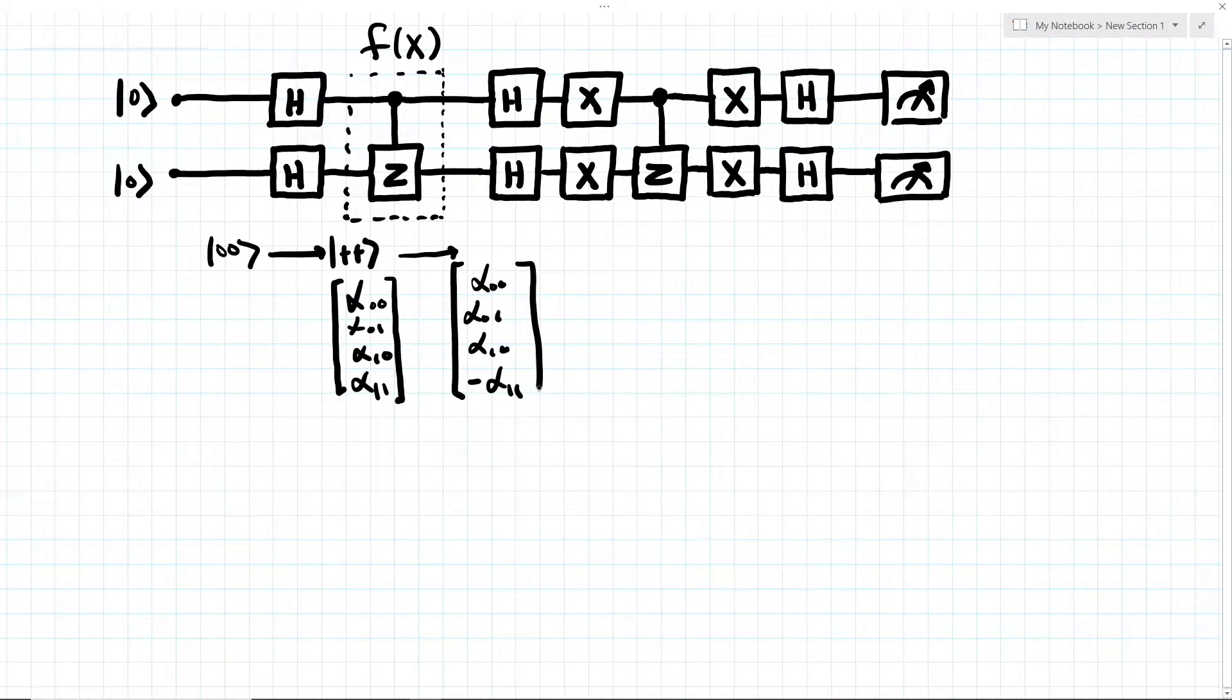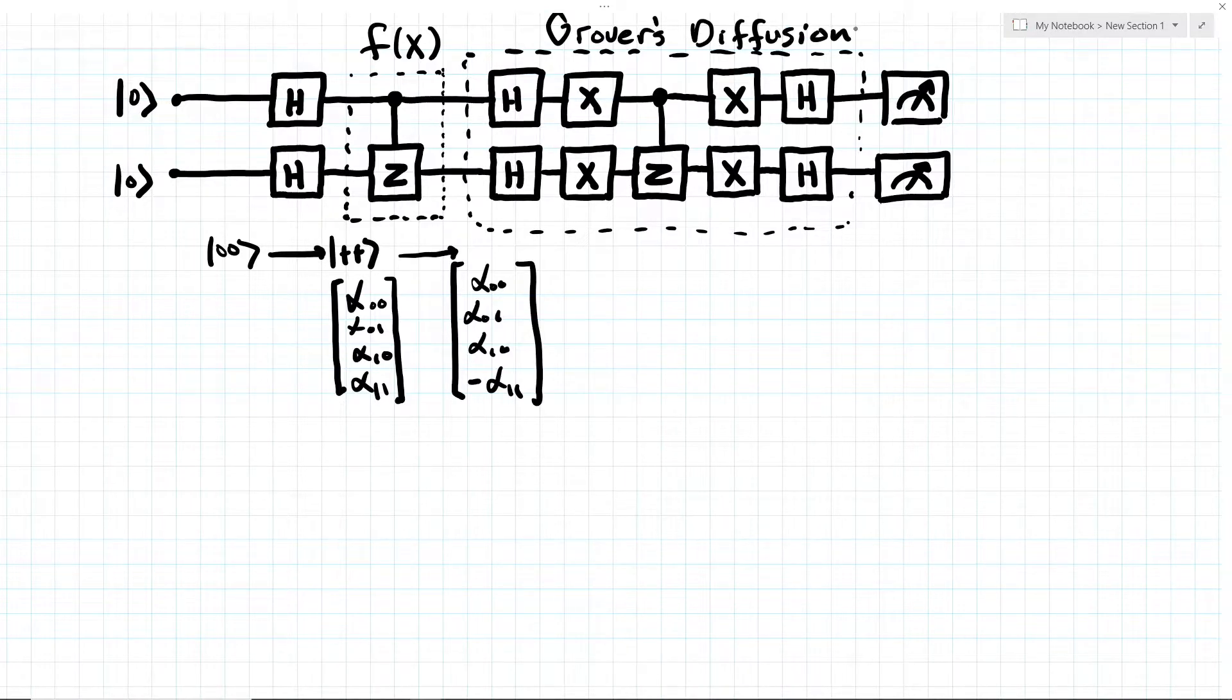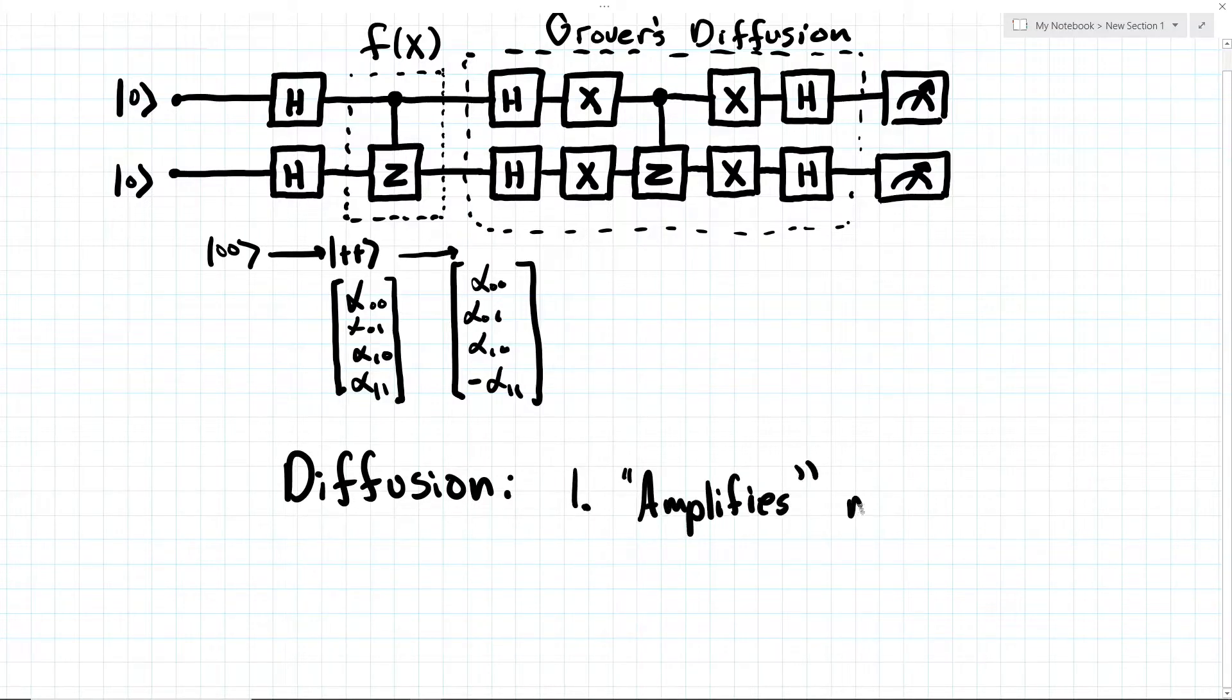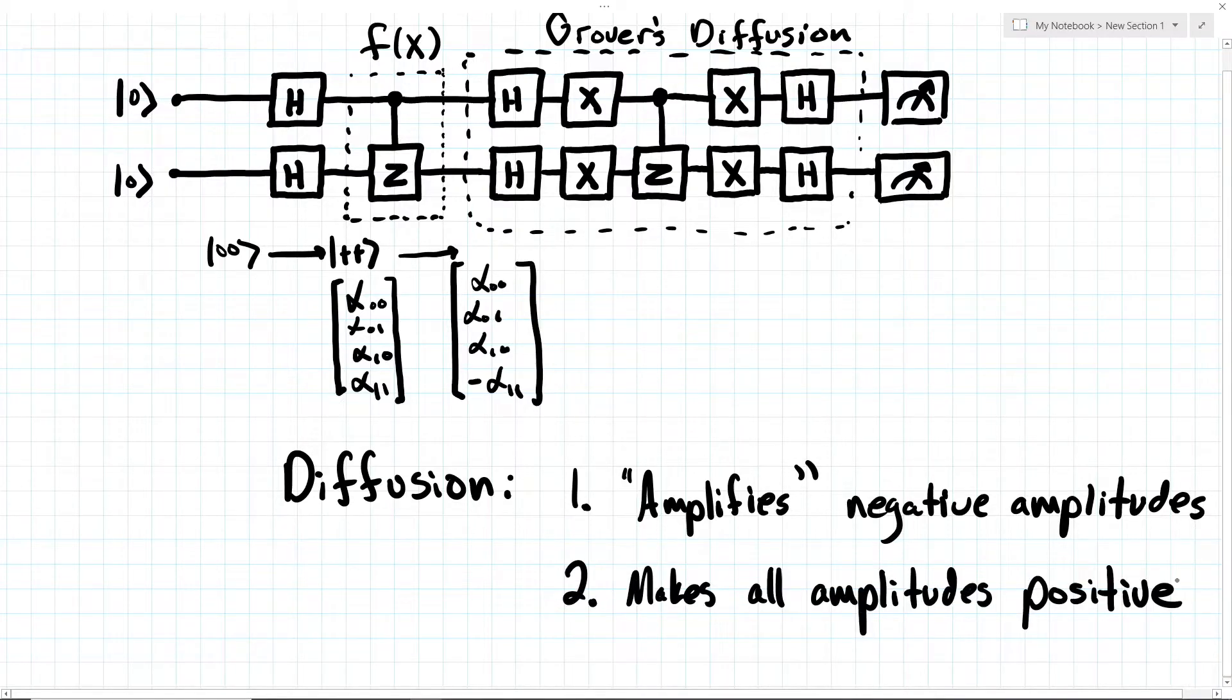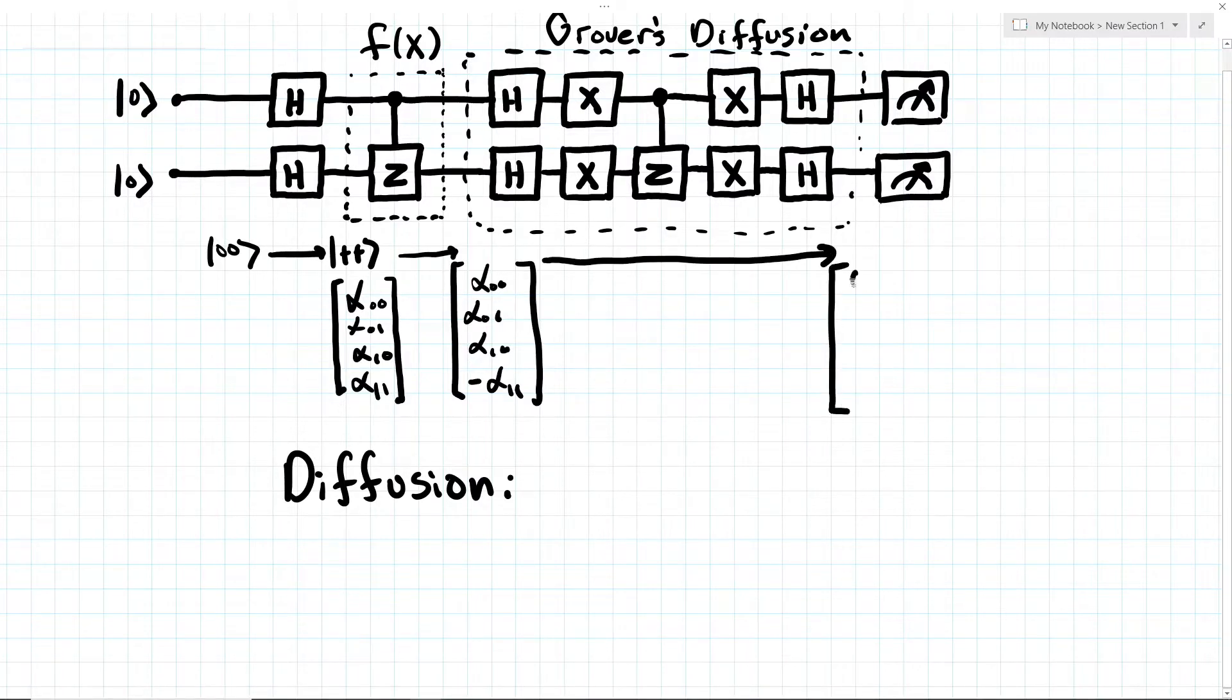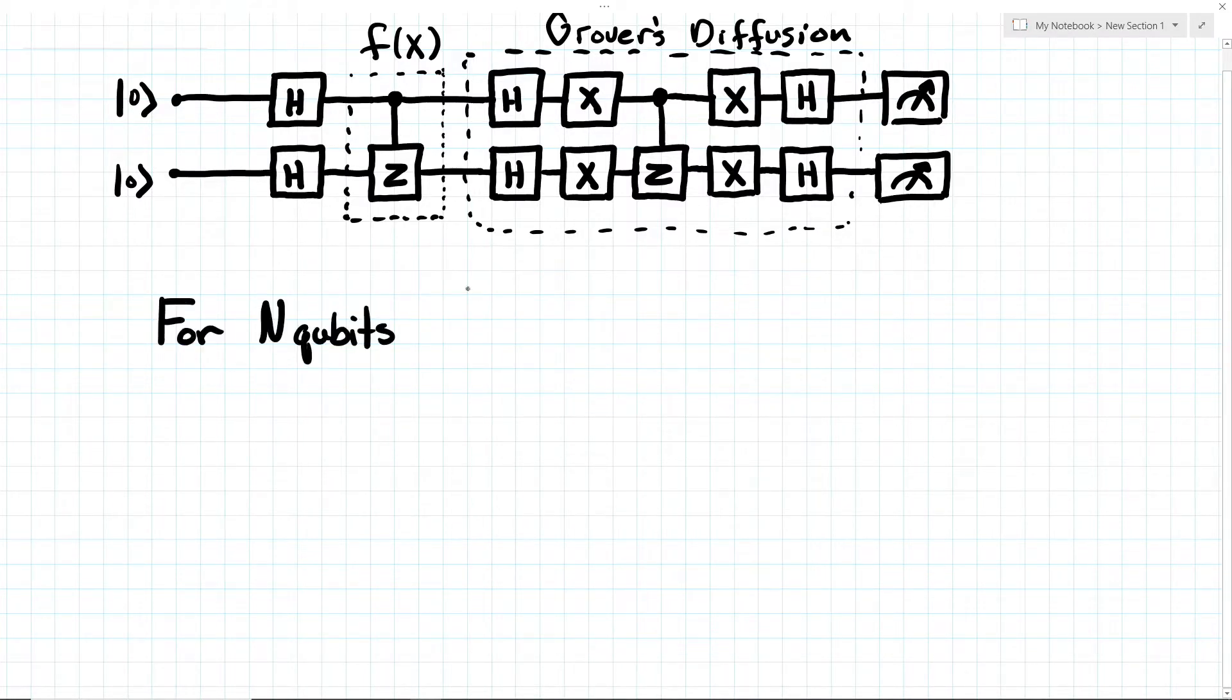The next thing we do is pass our qubits through an oracle, which swaps the phase of the amplitude of the state we are looking for. For a simple example, we can just use a controlled z gate, which will swap the phase of the 1-1 state. Then we pass our qubit through this circuit. Understanding why this circuit does what it does is a bit beyond this video. But in short, this step of Grover's will increase the amplitude of negative states and suppress the amplitude of positive states. The final effect of this portion of the circuit will be that we will lose the phase on the target state. In the two qubit case we are now done, the probability that we will measure a 1-1 when we measure our qubits is 100%. In a larger example, we repeat the oracle and amplification stage square root of n times to maximize the probability of measuring the target state.